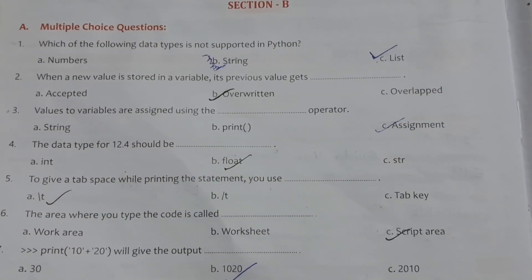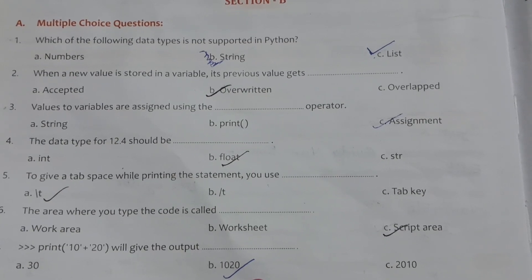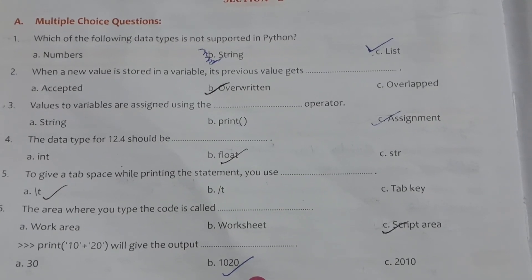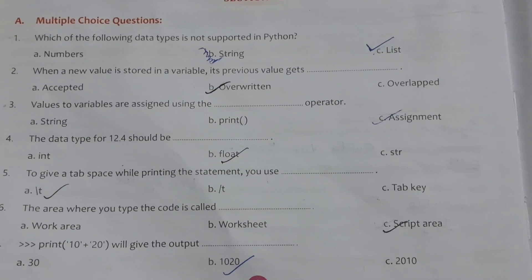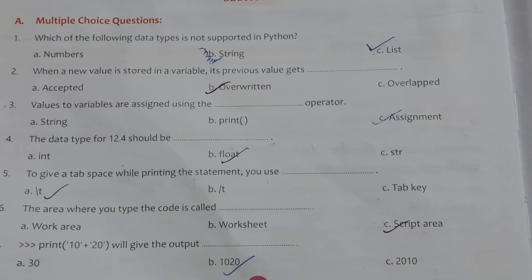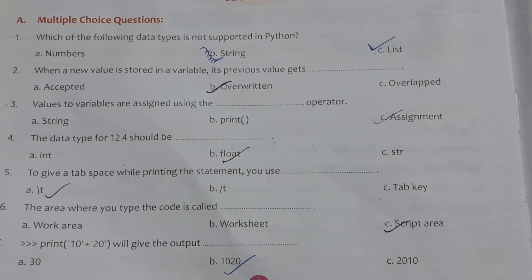Now, multiple choice questions. Which of the following data types is not supported in Python? Answer: Option C, List. When a new value is stored in a variable, its previous value gets — answer is overwritten. Values to variables are assigned using the dash operator. Answer: Option C, Assignment.